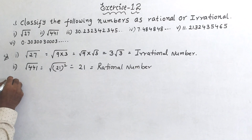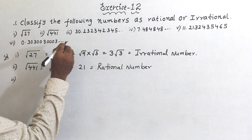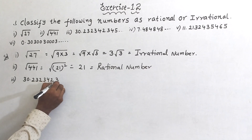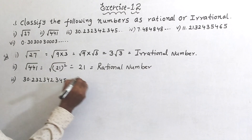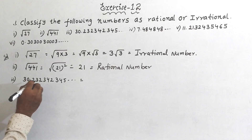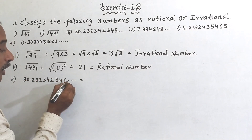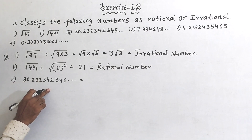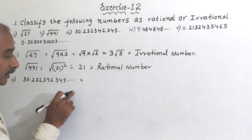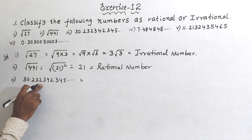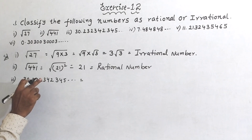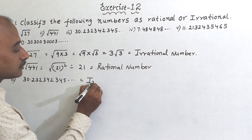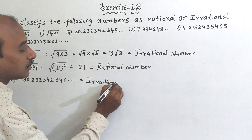Roman (iii): 30.2323423455... and so on. Here you can observe that after the decimal point the digits are continuous with no end, and the digits are not repeating. There is no end and after the decimal point the digits are non-repeating, therefore this is a non-terminating non-recurring decimal, and therefore this is an irrational number.